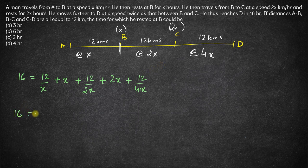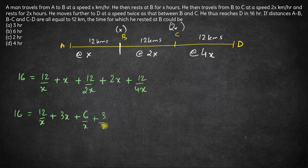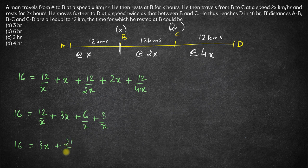So we have 16 is equal to 12 by x, x plus x is 3x, plus 12 upon 2x is 6 upon x, plus 12 upon 4x is 3 upon x. So we have 16 is equal to 3x plus 12 upon x plus 6 upon x plus 3 upon x. This is effectively 21 upon x.